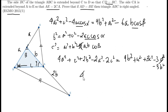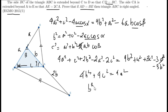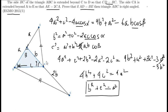This simplifies to 4b² + 4c² = 4a², and therefore b² + c² = a². This is the Pythagorean theorem, which is a very elegant proof. Since b² + c² = a², angle γ (angle C) must be 90 degrees.